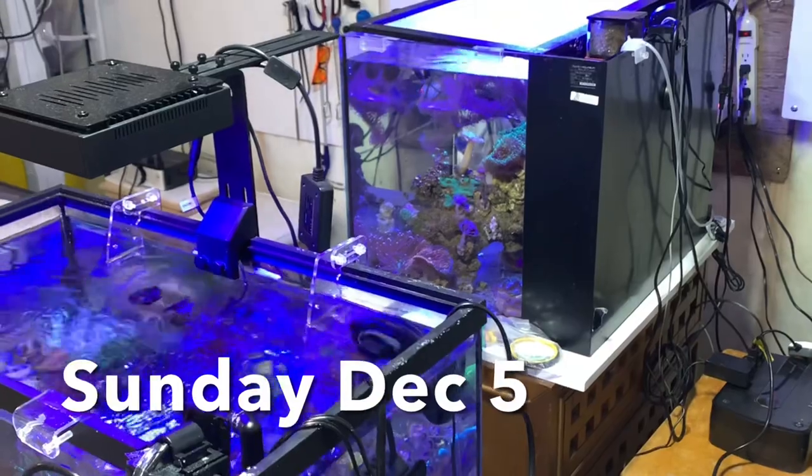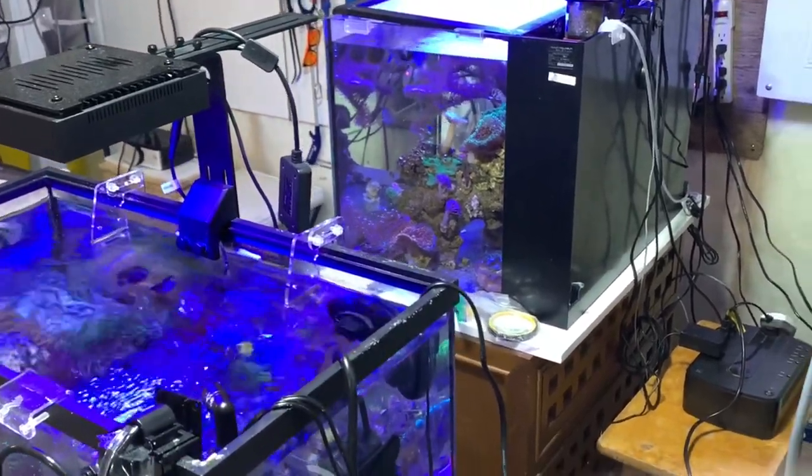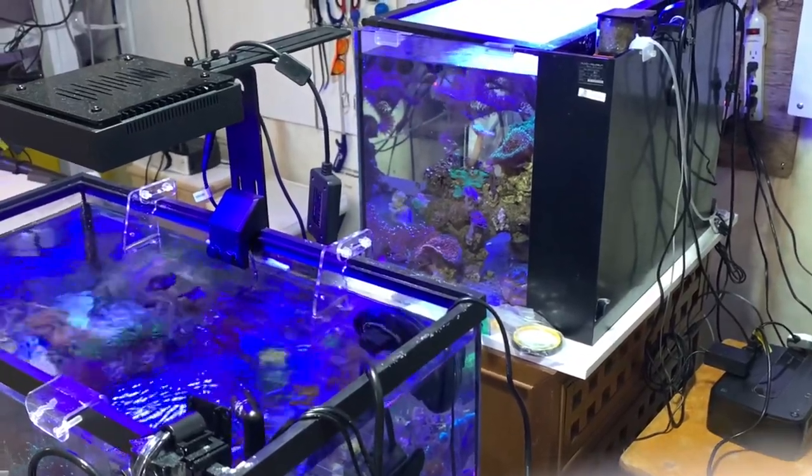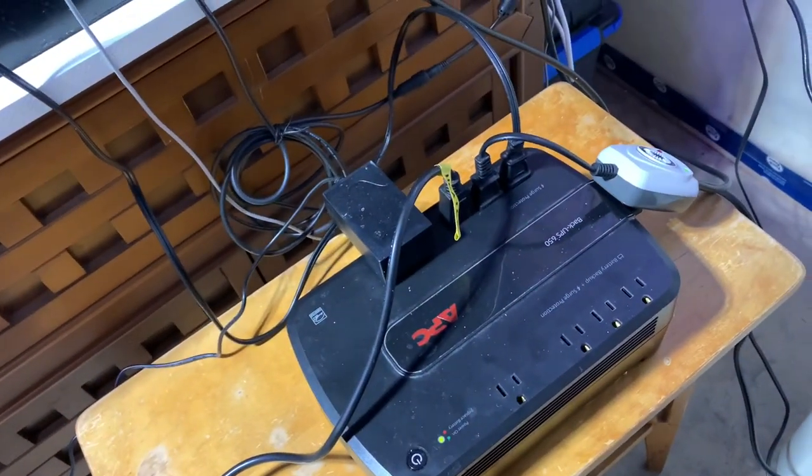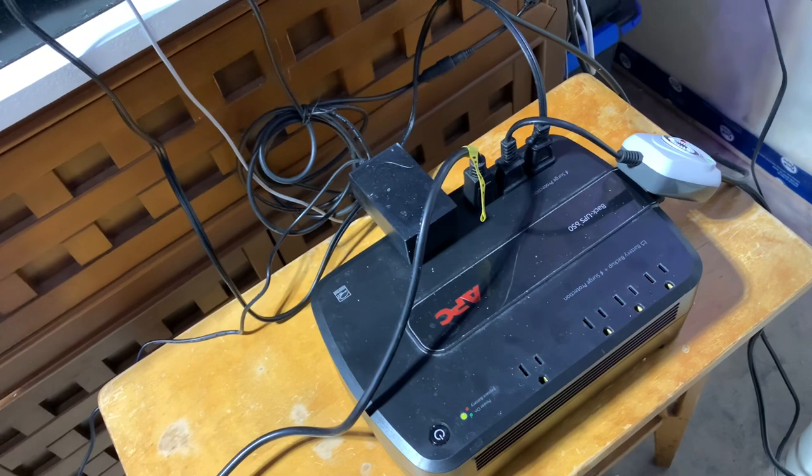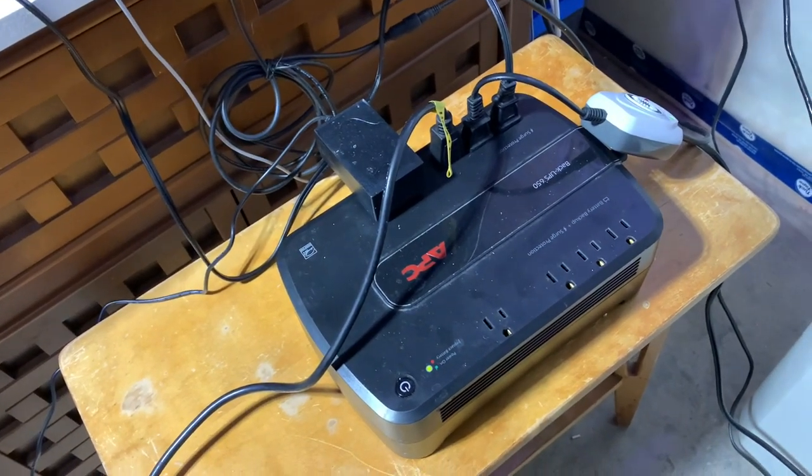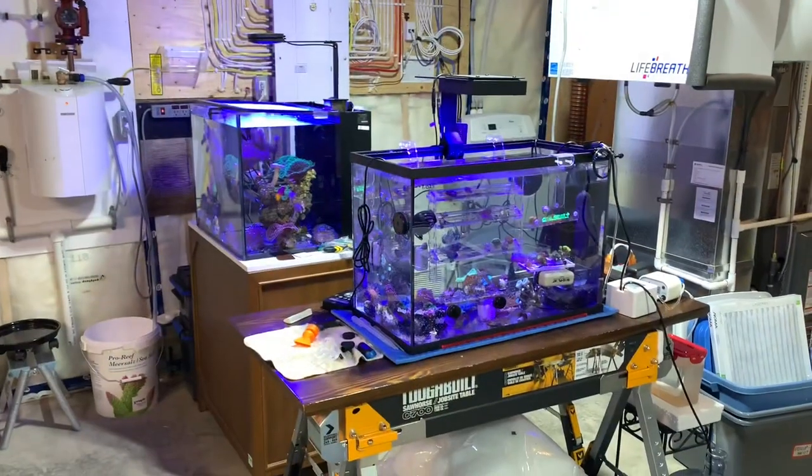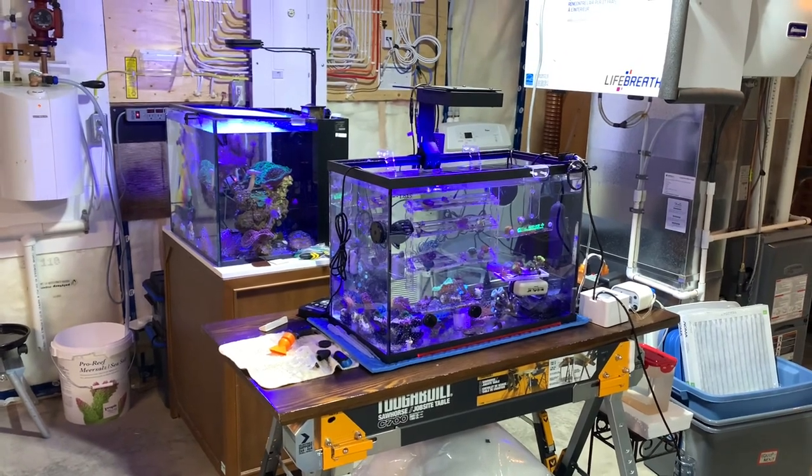We had weather warnings about possible power outages, so we decided it was time we finally backed up the observation tank and the frag tank by plugging a few things into the battery backup. What matters most in a power outage? Heat and flow. So I plugged the pump and heater from the observation tank and a powerhead and heater from the frag tank into the battery backup.